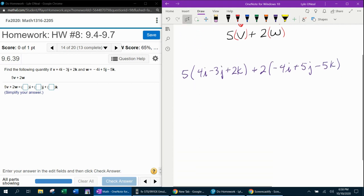And then we're going to need to get rid of those parentheses so that we can CLT. And for those of you that don't know, CLT stands for combine like terms. We're going to have 20I minus 15J plus 10K minus 8I plus 10J minus 10K.